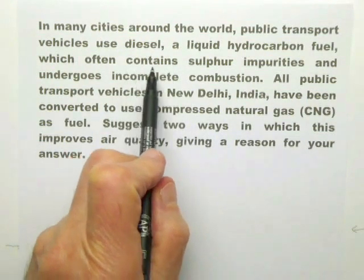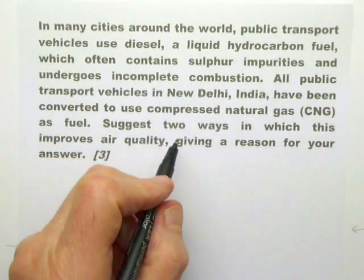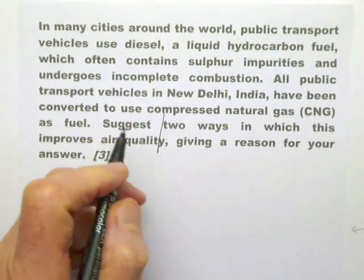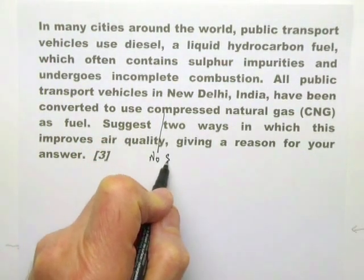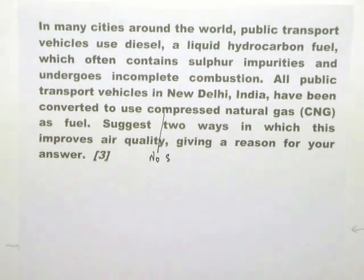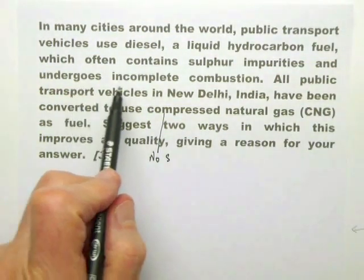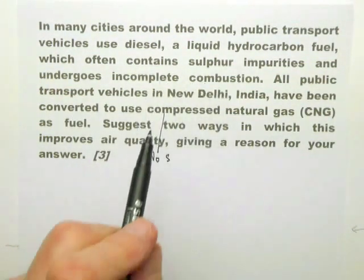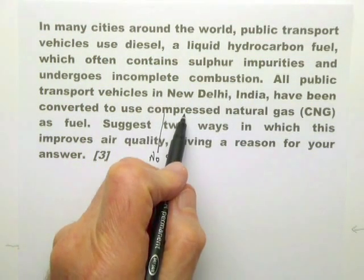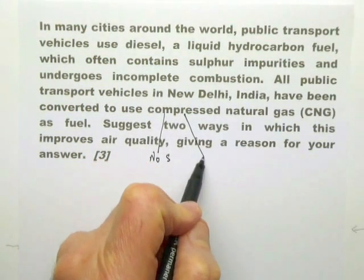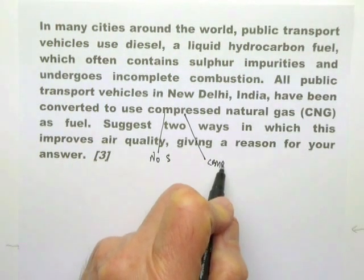All of them may well be right, but they may not be what the examiner wanted. So the examiner has to give you some very strong hints. In this question he has given you two very strong hints. He has said diesel contains sulphur impurities — you can immediately say that must mean with compressed natural gas no sulphur is present. He's also said it undergoes incomplete combustion, so he must mean that compressed natural gas undergoes complete combustion.